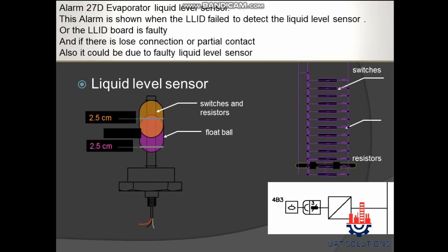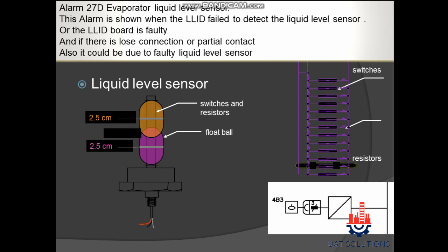Alarm 27D — Evaporator Liquid Level Sensor: This alarm is shown when the LLID fails to detect the liquid level sensor, or the LLID board is faulty. It can also occur if there is a loose connection or partial contact, or if the liquid level sensor itself is faulty.